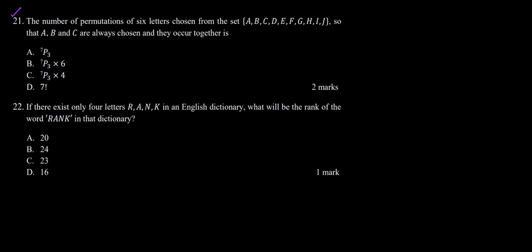The question says: the number of permutations of 6 letters chosen from a set — where A, B, C are always chosen and they occur together. So we need to find the possible ways, the number of permutations of 6 letters chosen. Here you can see we have 10 letters given and we need to choose 6 out of them where A, B and C have to be chosen always.